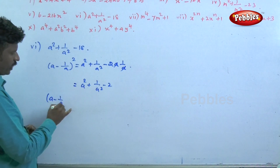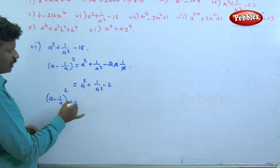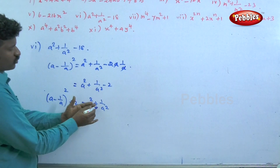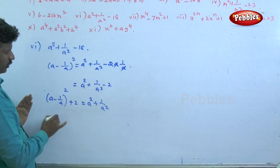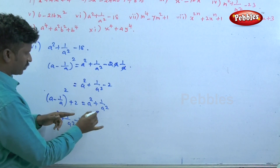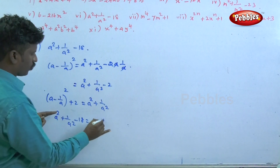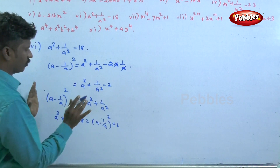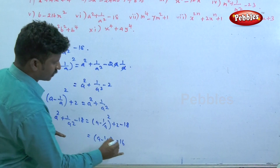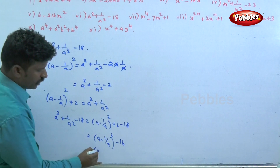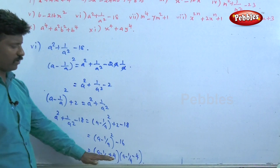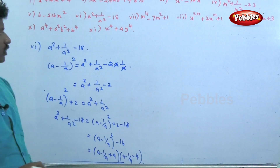So a squared plus 1 by a squared minus 18 equals a minus 1 by a whole square plus 2 minus 18, which is a minus 1 by a whole square minus 16. This is of the form a squared minus b squared, so a plus b into a minus b. This is the factor for the sixth question.